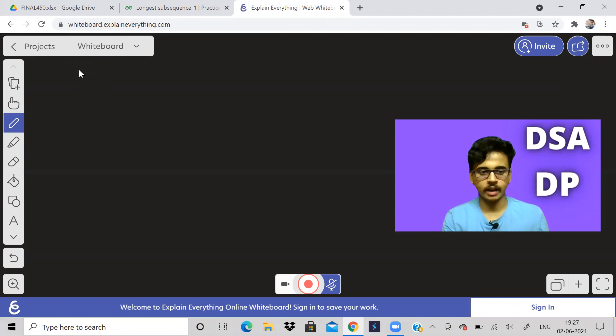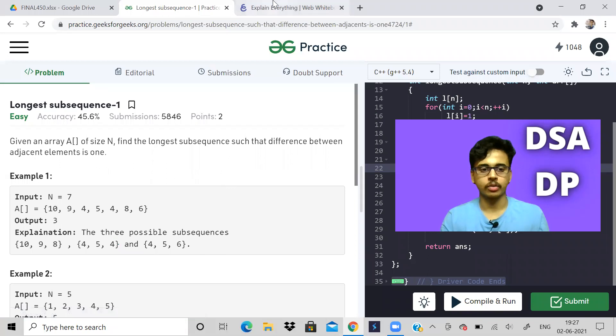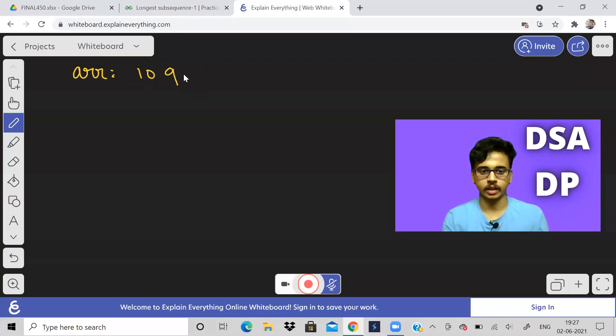Now, how do we solve the problem? Well, let us again write down our array. Our array is 10, 9, 4, 5, 4, 8, 6. So this is our input array. And let us say we make an array called L, simply L like the longest subsequence.